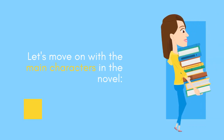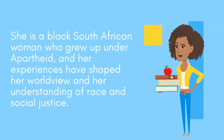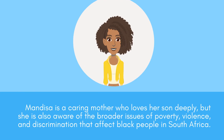Let's move on with the main characters in the novel. Mandisa is a complex character who is deeply conflicted about her son's involvement in the murder of Amy Beale. She is a black South African woman who grew up under apartheid, and her experiences have shaped her worldview and her understanding of race and social justice. Mandisa is a caring mother who loves her son deeply, but she is also aware of the broader issues of poverty, violence, and discrimination that affect black people in South Africa.